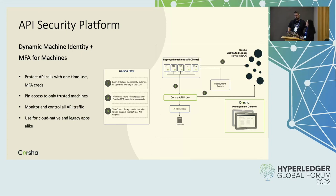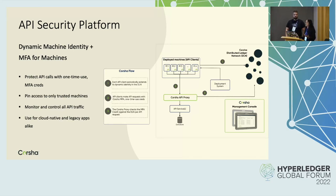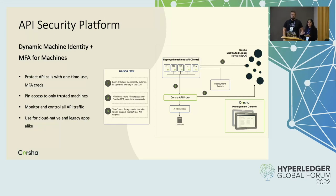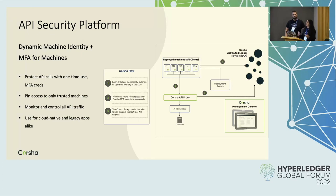The platform builds out dynamic machine identities for API clients. I'm sure you're all familiar with multi-factor authentication on the human side — a Google Authenticator, RSA token, or some form of TOTP that layers on to basic username and password authentication. What we've developed at Korsha is a way to do fully automated MFA using these dynamic machine identities on the ledger.